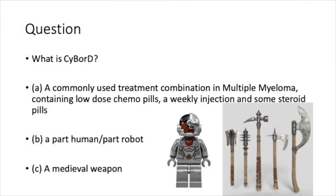Another question: what is CyBorD? Is it A, a commonly used treatment combination in multiple myeloma containing low-dose chemo pills, a weekly injection and some steroid pills; B, a part human, part robot; or C, a medieval weapon? The answer is A. I really should have made these questions harder.